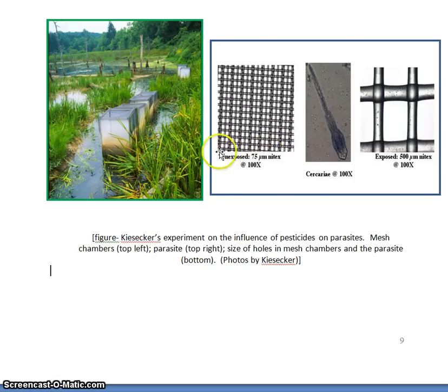For some of the cages, the netting was very fine, and so the holes in the netting were very small. And these holes were too small to allow parasites into the cage where the tadpoles were. Other cages had netting where the holes were bigger, that would be big enough to allow for the parasite to go through the netting.